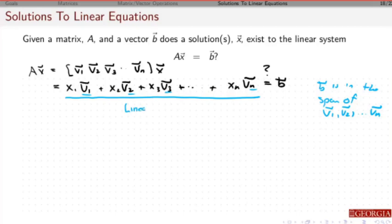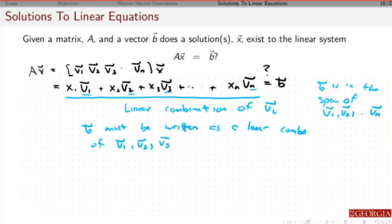We can think of this in terms of these v vectors - this is a linear combination of the v vectors. This basically says that in order for there to be a solution, a linear combination, we have to take b and we have to be able to write it as a linear combination of these vectors v₁, v₂, v₃.